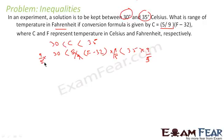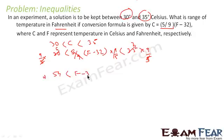After multiplying by 9/5, the left side becomes 6 and the right side becomes 7. So what we get is 9 into 6 is 54, which is less than (F minus 32), and 9 into 7 is 63. Now let's add 32 to all sides.